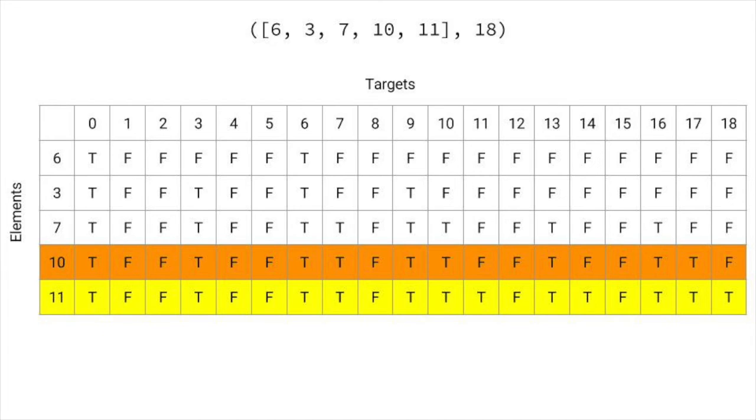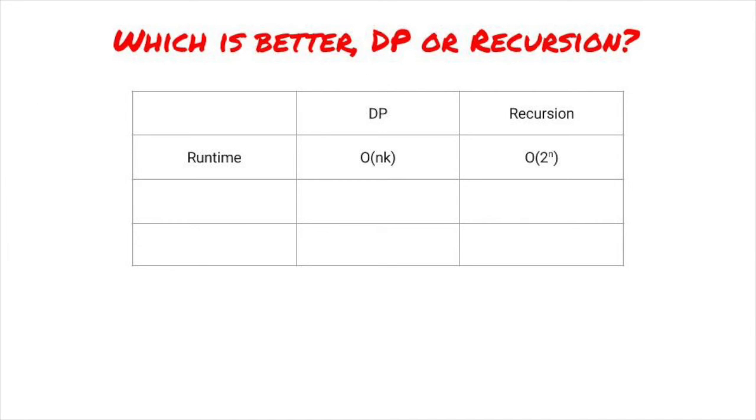O of n k isn't exponential, and O of 2 to the n is exponential. Therefore O of n k is better, right? Not so fast. It depends on the range of the elements. If there are many elements, or the target is small, the O of n k solution is better.